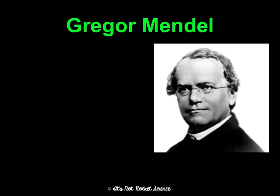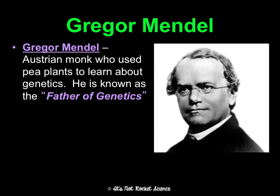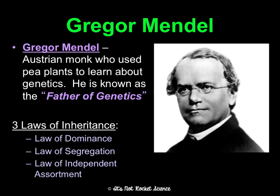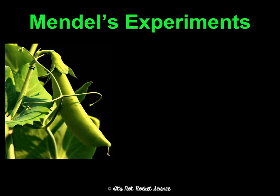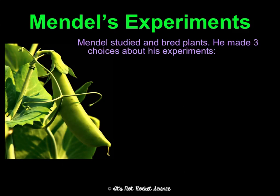Gregor Mendel was an Austrian monk who studied pea plants, and that's how he learned what we know about basic genetics. He's known as the father of genetics. He came up with three laws of inheritance: a law of dominance, a law of segregation, and a law of independent assortment. Before we go through each one, I want to give you some background on his experiments so you can understand how he came to his conclusions.